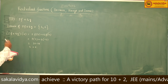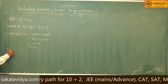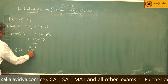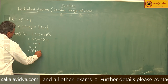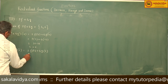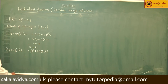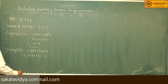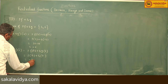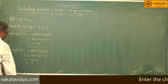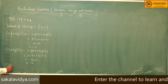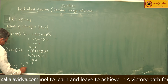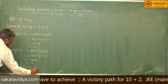Now, 2f plus 4g of 6, that is 2f of 6 plus 4g of 6. f of 6 is equal to minus 4, so 2 into minus 4 plus 4 into g of 6 is equal to 5. So, minus 8 plus 20, which equals 12. Therefore, 2f plus 4g equals {(4, minus 6), (6, 12)}.